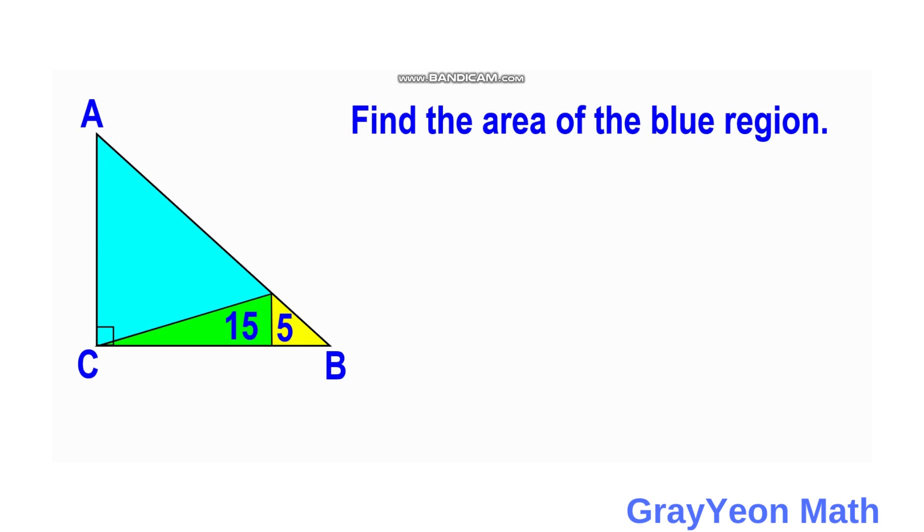Okay, so first thing that we have to notice is that these two triangles, the two triangles at the bottom, the green and the yellow, share a common height. So let's call this as h. And since their areas are 15 and 5, so if we say that area of the green is equal to 15 and area of the yellow is equal to 5, and therefore area of the green is equal to 3 times area of the yellow.